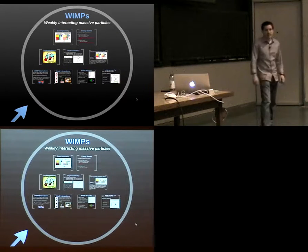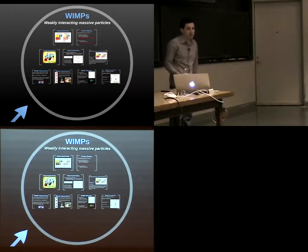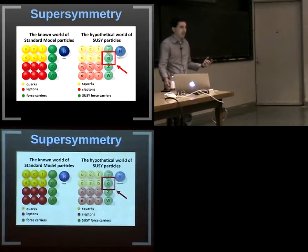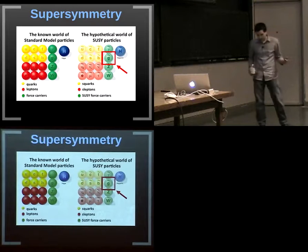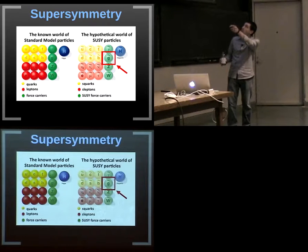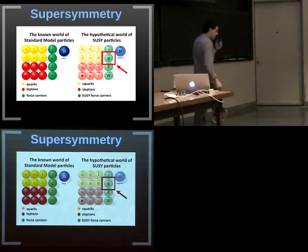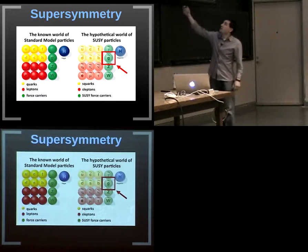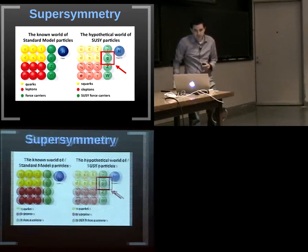The last thing I'll talk about is weakly interacting massive particles — WIMPs. This is motivated by supersymmetry, which proposes a correspondence between the fermions and bosons in the standard model and heavier super partners that have all the same quantum numbers except their spins are increased by half. We give these super particles funny names: quarks become squarks, leptons become sleptons, neutrinos become sneutrinos, and for force carriers we add 'ino' at the end — so the Higgs becomes a higgsino, the W becomes a wino.